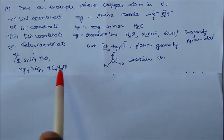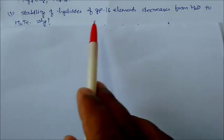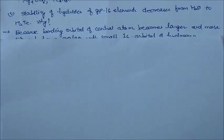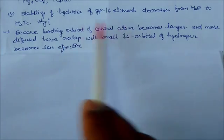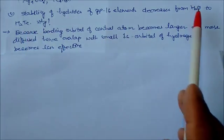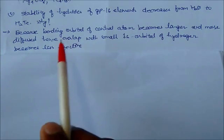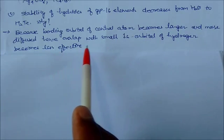Stability of hydrides of Group 16 elements decreases from water to H2Te. Why? Because the bonding orbital of the central atom becomes larger and more diffuse, so the overlap with small 1s orbital of hydrogen becomes less effective.